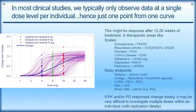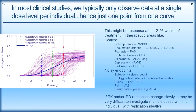In most clinical studies, we typically only observe data at a single dose level per individual — just one point from one curve. For example, in 12-week or 26-week studies in therapeutic areas like schizophrenia or rheumatoid arthritis, endpoints like the PANSS score, DAS28, ACR20, or PASI score are only going to be observed at one dose level per individual. If the PK and/or PD responses are changing slowly over 26 or 12 weeks, it's very difficult to investigate multiple doses within an individual, with each value measured with error.